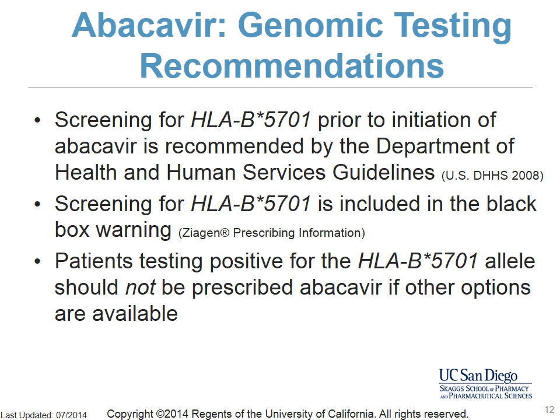Screening for HLA-B*5701 prior to initiation of abacavir therapy is recommended by the Department of Health and Human Services guidelines and is included in the black box warning of the prescribing information. Patients testing positive for the HLA-B*5701 allele should not be prescribed abacavir if other options are available. Patients who are negative for HLA-B*5701 may still develop HSR, so monitoring remains crucial.